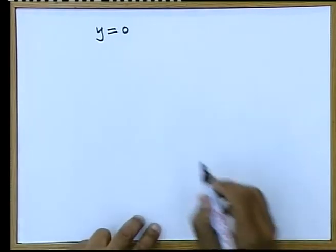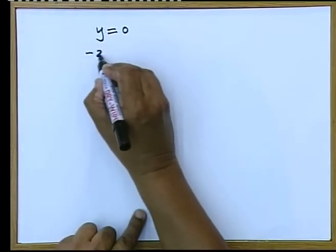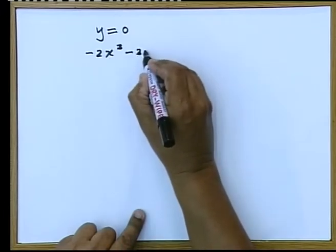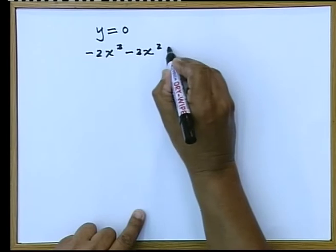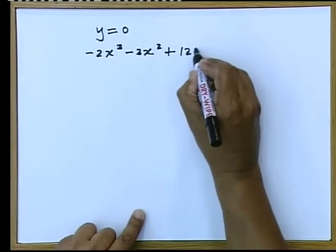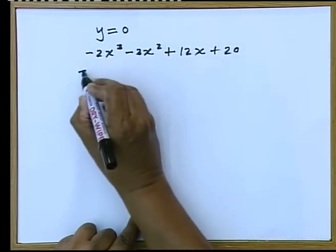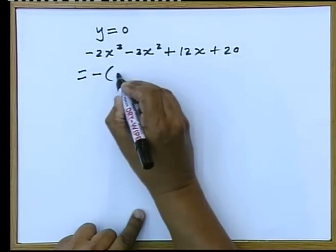In doing that you are going to find that you have minus 2x cube minus 3x squared plus 12x plus 20, which was nicely factorized as this.